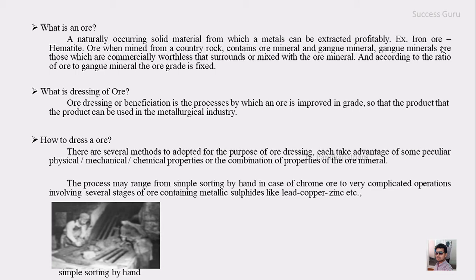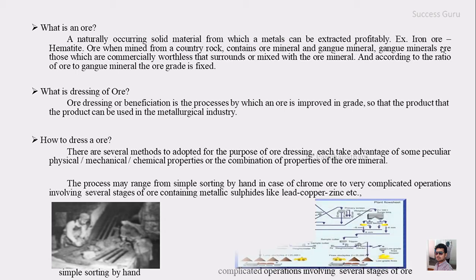The process may range from simple sorting — just by seeing and separating by hand, which is also an ore dressing process — to a very complex process, such as that used for lead, copper, and zinc, involving many steps to separate out a particular mineral. These represent the two main extents of ore dressing: simple hand sorting at one end and complex multi-step processes at the other.